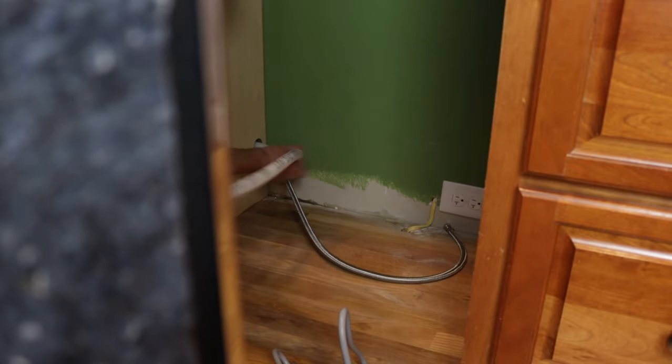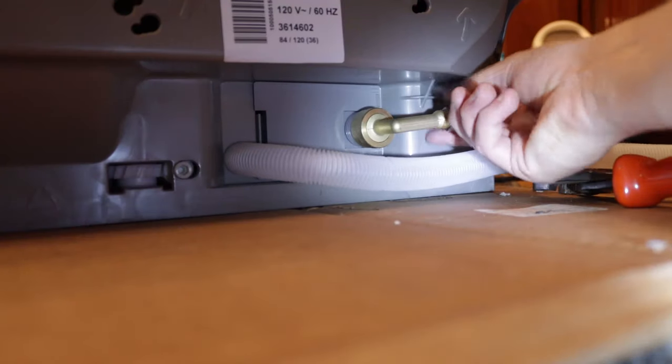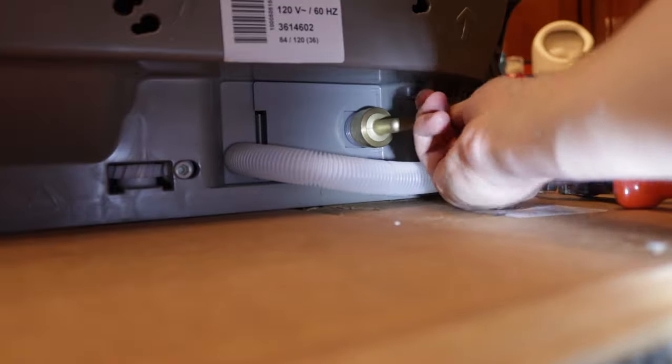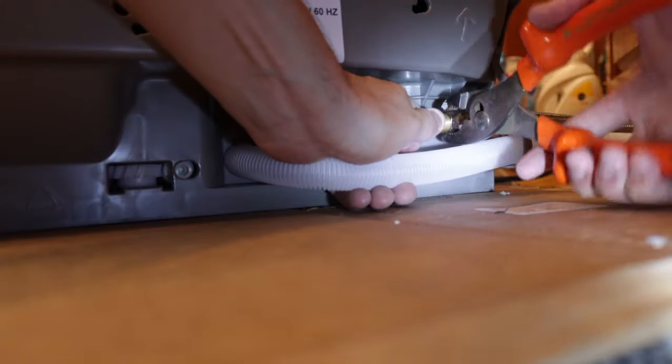Make sure whenever you're attaching things onto the actual dishwasher unit that you're stabilizing it with your hand, so this way you don't break off any of the components inside the dishwasher because it's a lot of plastic and thin steel.